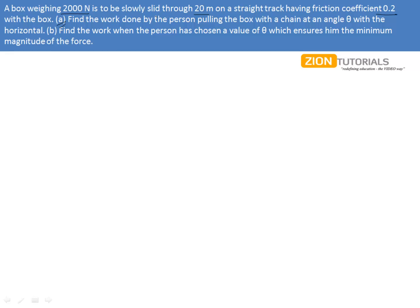(a) Find the work done by the person pulling the box with a chain at an angle θ with the horizontal.